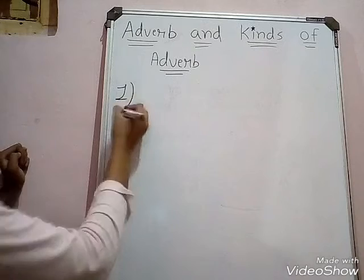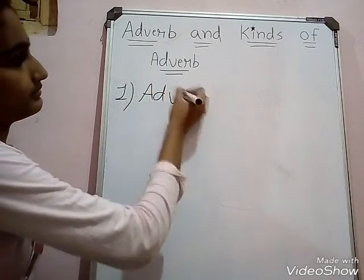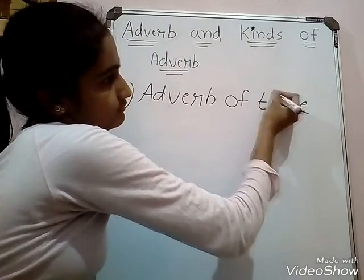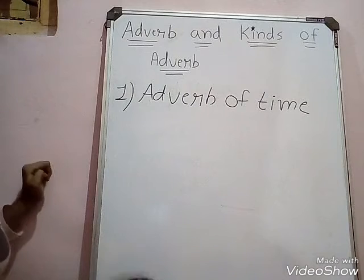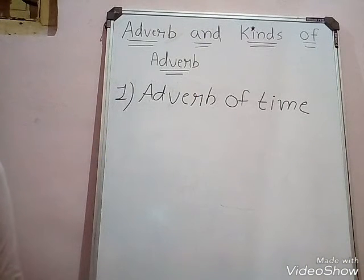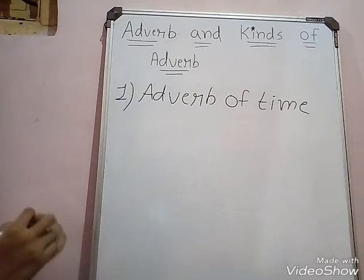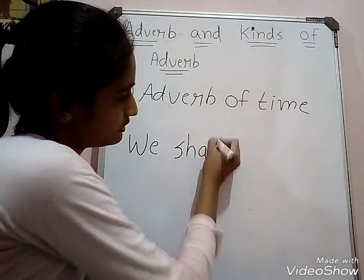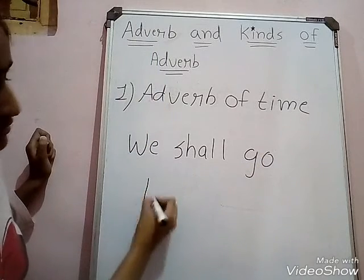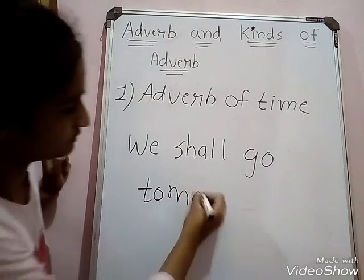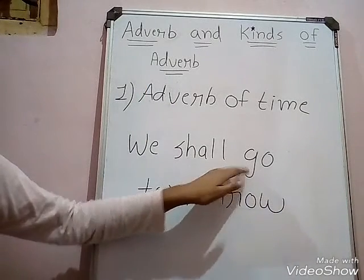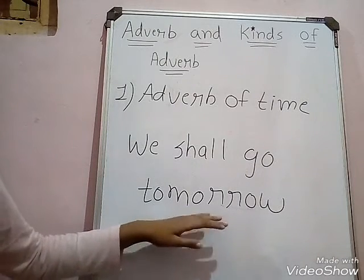The first kind is adverb of time. What is meant by adverb of time? It tells us about when or at what time an action is done. Here is an example: 'We shall go tomorrow.' We go — but at what time do we go? Tomorrow. So 'tomorrow' is our adverb of time.